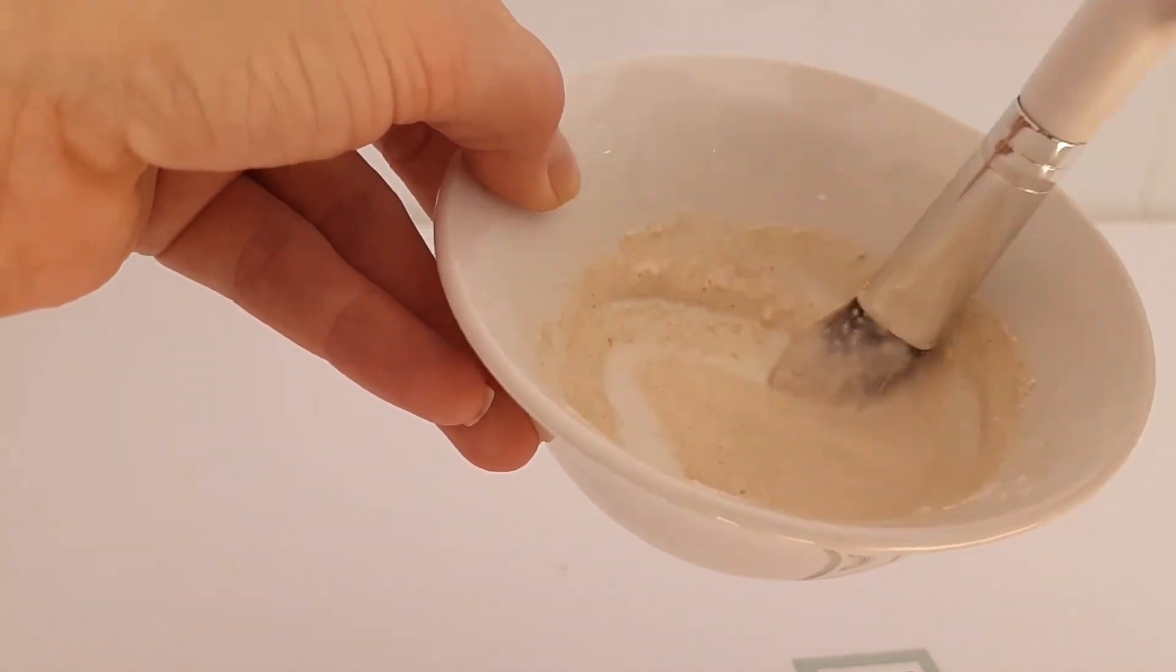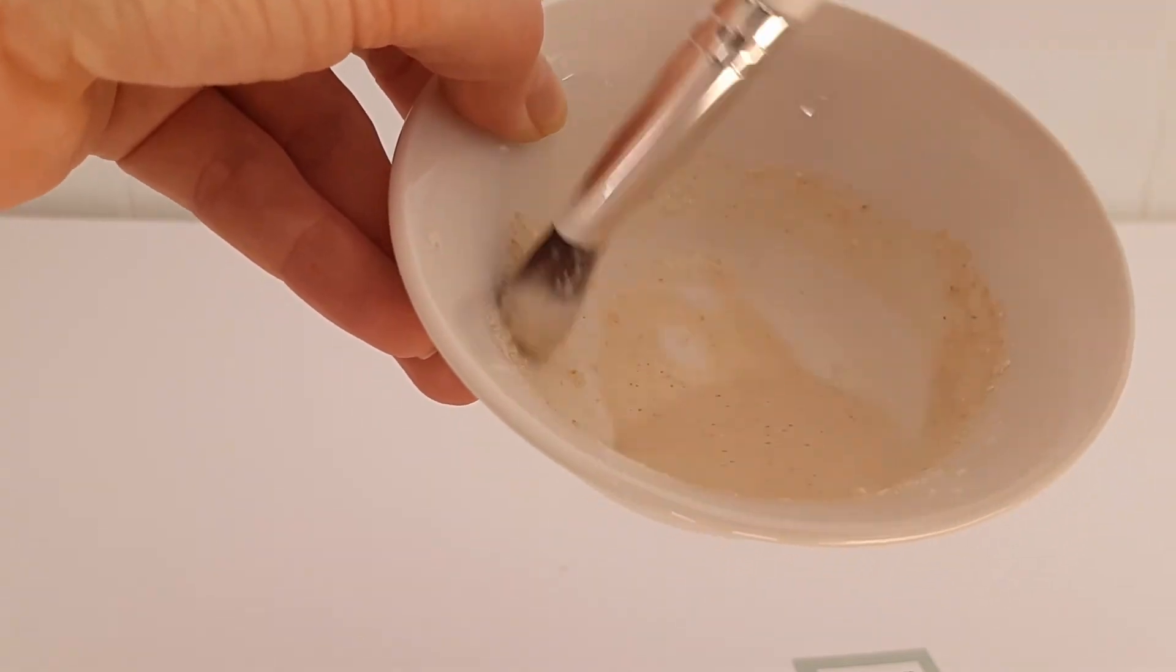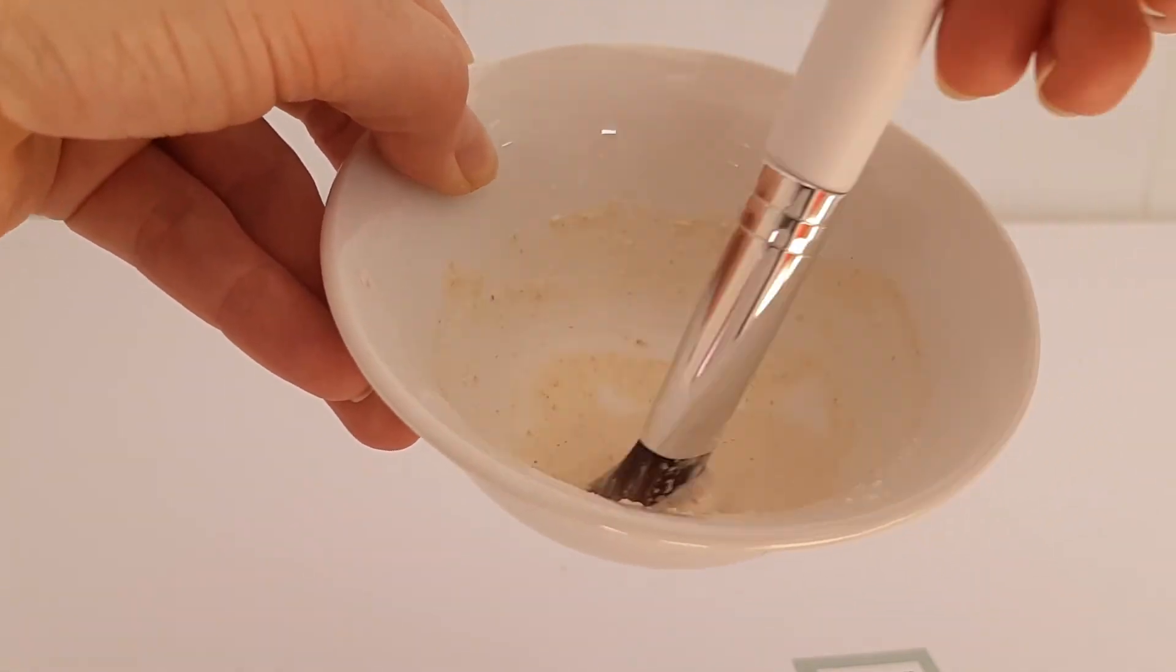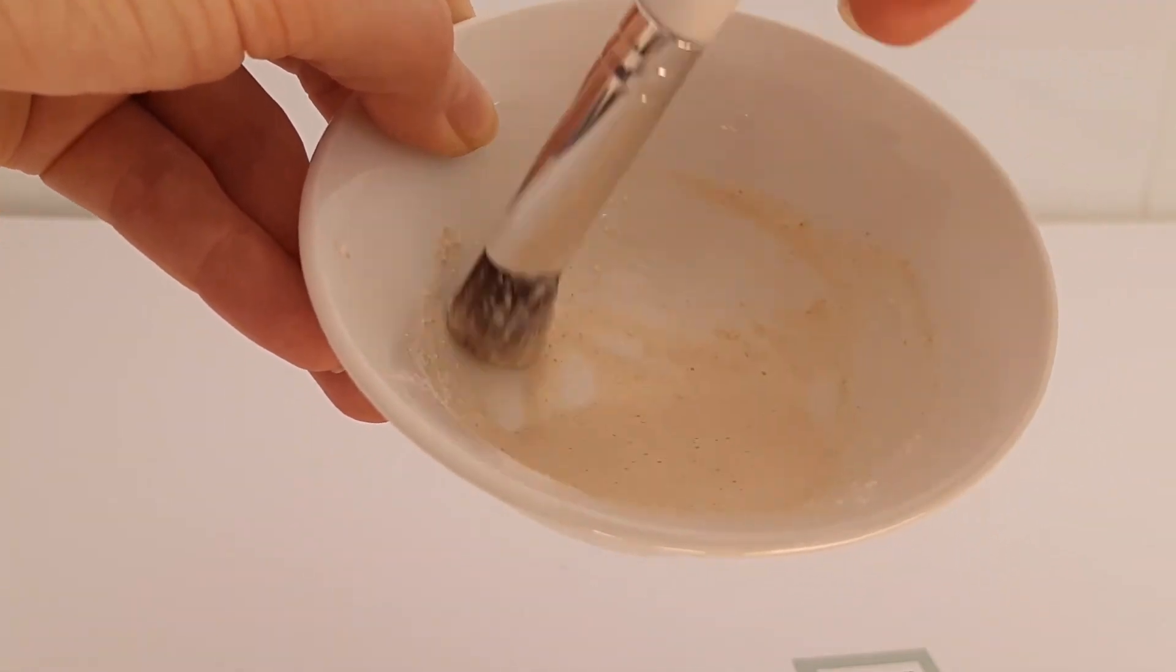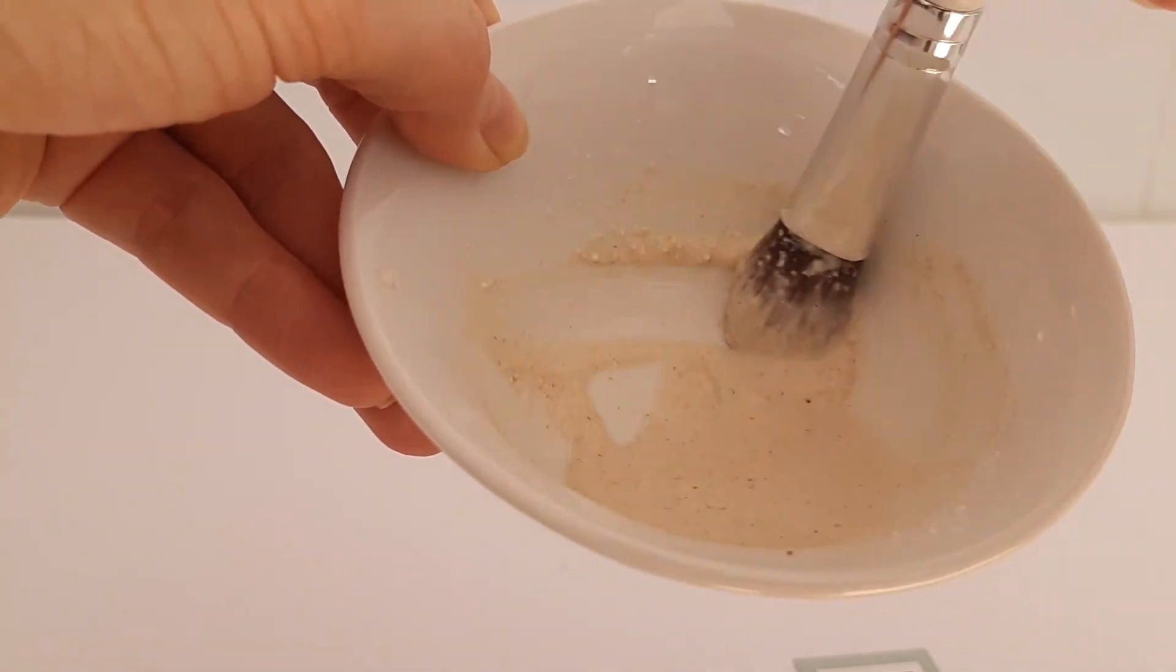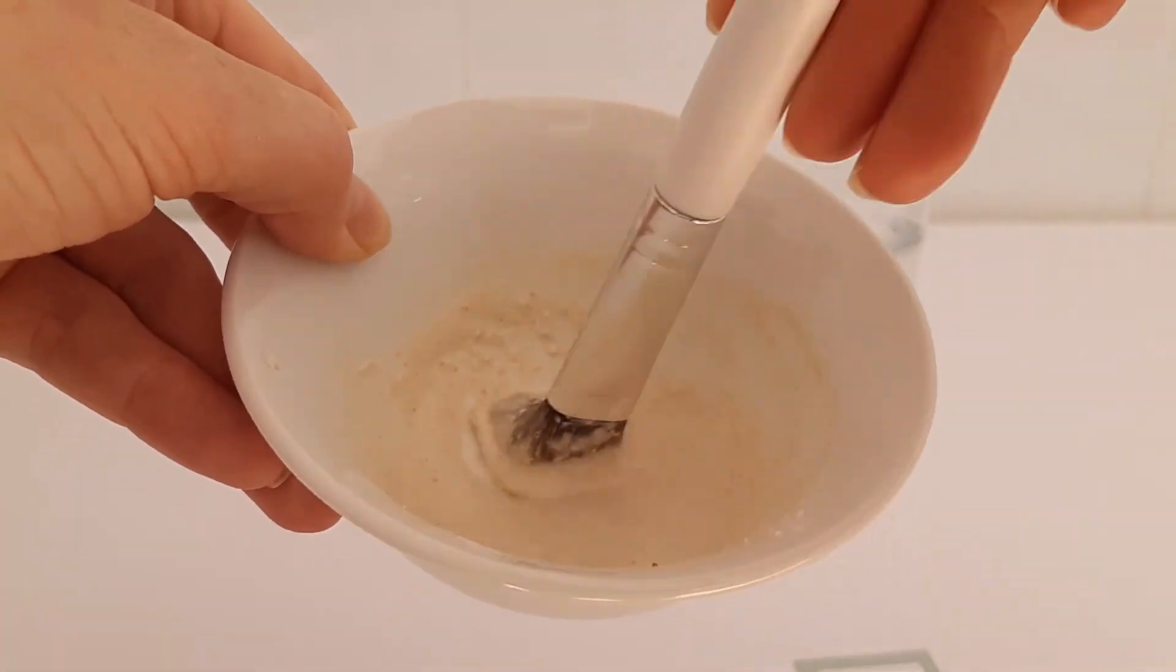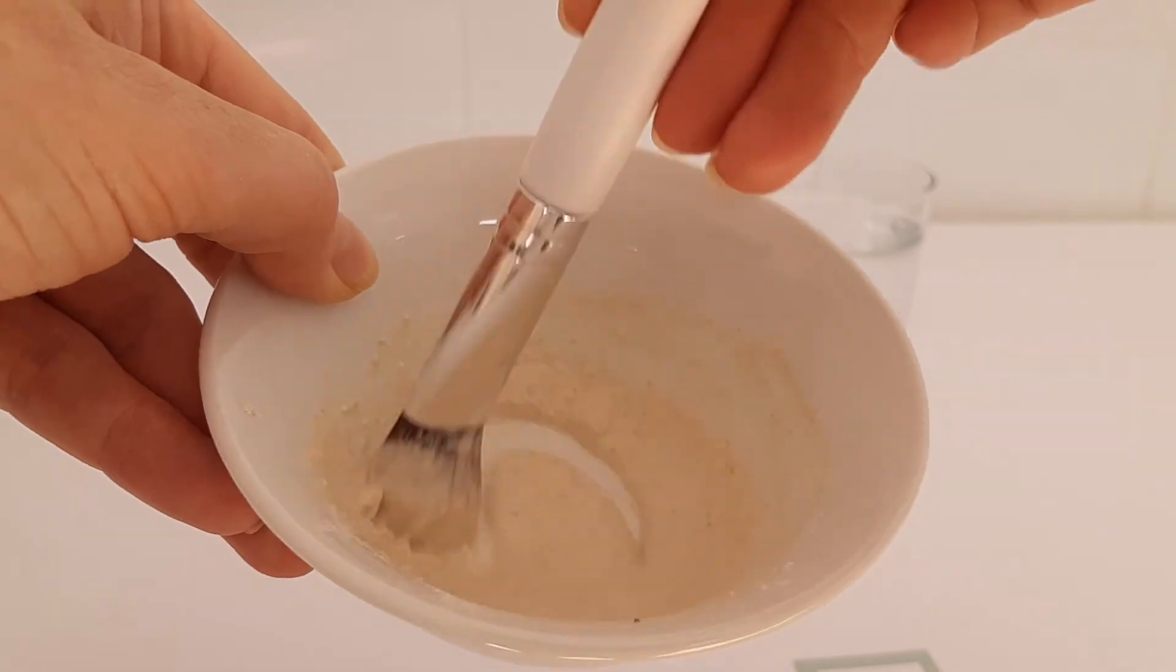The fruit enzymes can get to work dissolving any dead skin cells, and the coconut milk can really deeply nourish your skin. There we go, that's a beautiful texture. It does tend to thicken up a little bit as well.